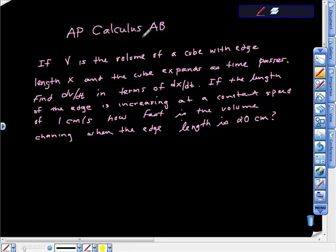If V is the volume of a cube with edge x and the cube expands as time passes, find dV/dt in terms of dx/dt. If the length of the edge is increasing at a constant speed of one centimeter per second, how fast is the volume changing when the edge length is 20 centimeters?